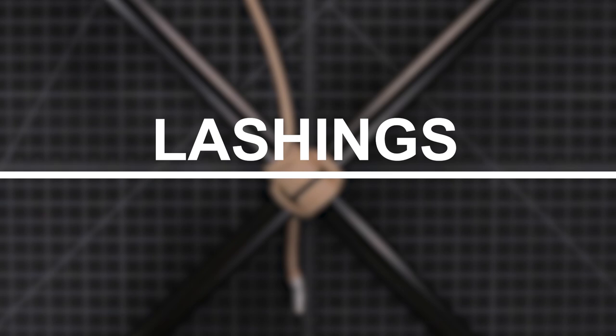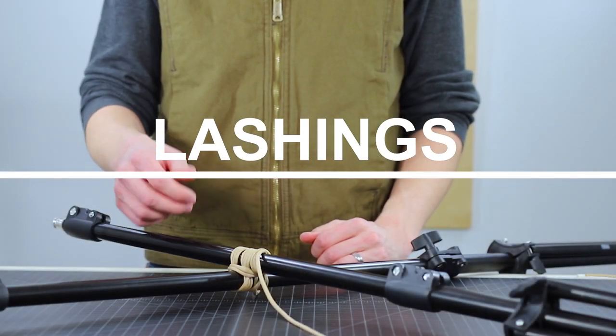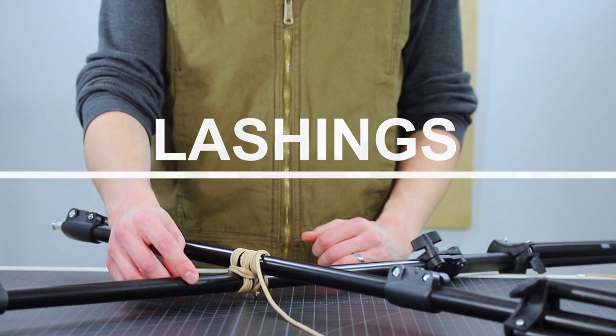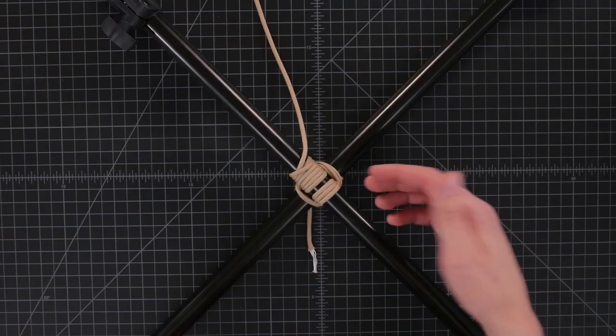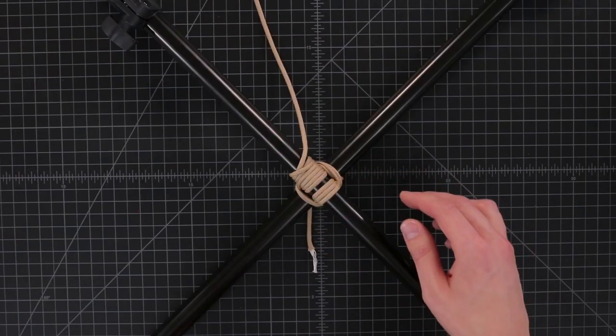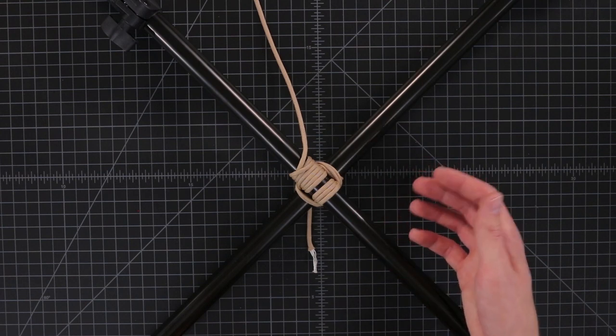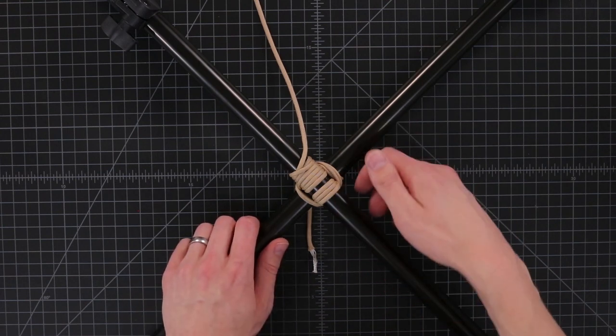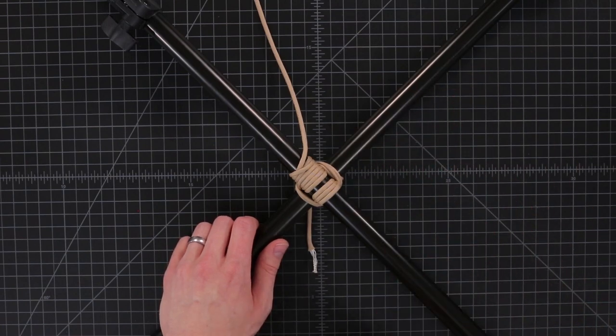Next we've got lashings. Lashings are a little bit different breed of knot. They are used to tie two different objects to each other. Here I've got two poles tied with a square lashing. There are a couple different kinds of lashings. This one is to keep the perpendicular pole from sliding on the upright pole.